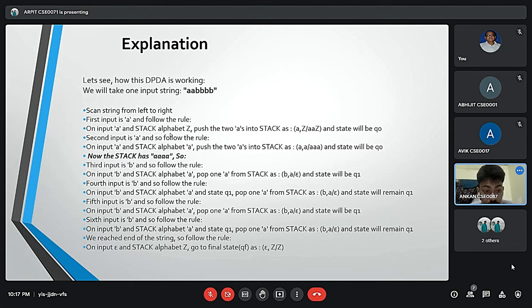Here, the fourth input is B, so follow the rule: on input B and stack alphabet A in state Q1, pop one A from the stack and remain in Q1. The fifth and sixth inputs are also B, following the same rule. Thus we reached the end of the string. On input epsilon and stack alphabet Z, go to the final state QF as epsilon, Z → Z. That's all from my side.